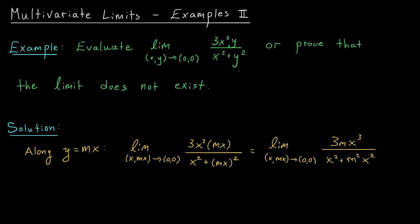Hi everyone, and welcome back. In this video, I have another example for you on working with multivariate limits. In this case, we'll be studying the limit as (x,y) goes to (0,0) of 3x²y divided by x² plus y². We'll either evaluate this limit or prove that the limit doesn't exist.